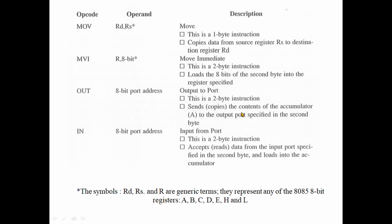Move Immediate uses the accumulator. For IN and OUT instructions, the second byte is the port address in 8-bit. The first byte is the opcode and the second byte is the port number — this is the 2-byte instruction. Data is read into the accumulator.